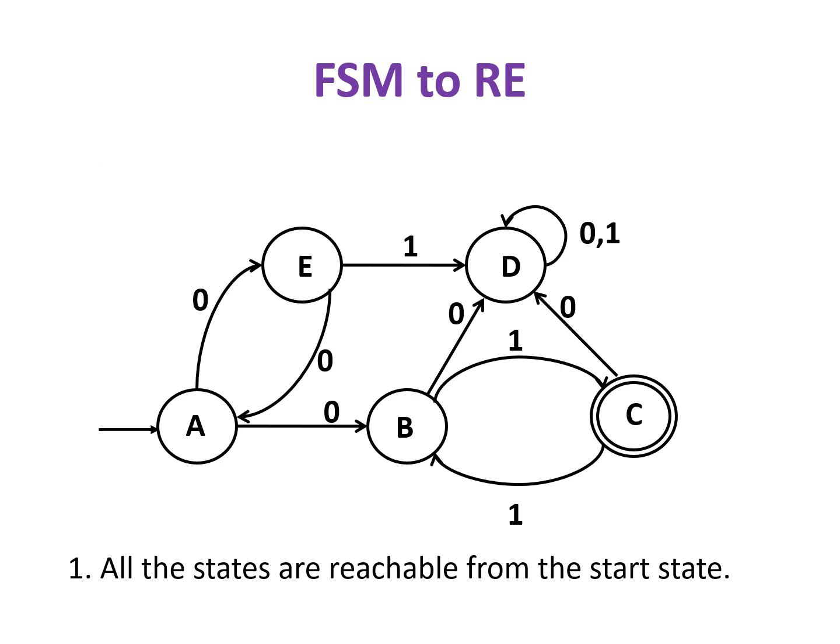Once we get all the states reachable from the start state, next step is to check whether the finite state machine has any accepting states. If it does not, then the regular expression will be equal to null. In this machine, we have C as the accepting state. So M has accepting states.